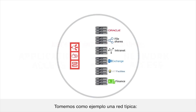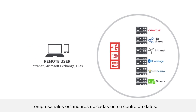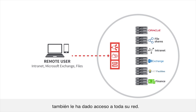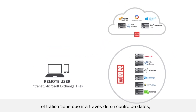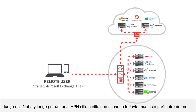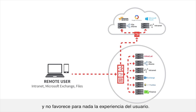Take a typical network. You have a remote user that needs to get access to standard business apps in your data center, and you give them VPN access. But you've also given them access to your entire network. If you've provisioned applications in the cloud, the traffic has to go through your data center and then up to the cloud in a site-to-site VPN tunnel, which expands that network perimeter further and doesn't do anything good for the user experience.